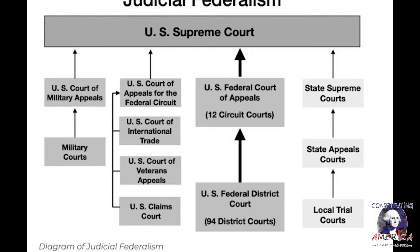Next week we're going to talk about state courts. Looking at the chart today at the U.S. Federal District Court — there are 12 of those — but why does it say 94 district courts underneath that? Because there are 94 district courts, and district courts are the courts that hold trials. They hear disputes, rulings are made at those levels, and if you're not happy with those you appeal to one of the 12 circuit courts.